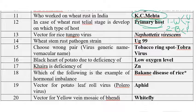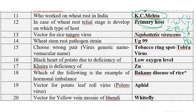The pycnial stage and aecial stage happen in Barberry, the secondary host. The basidiospore stage happens in soil. So two alternate hosts are required for wheat stem rust — wheat and Barberry. In wheat, the uredial stage and telial stage are formed. The pycnial stage and aecial stage are formed on Barberry, whereas the basidiospore stage is formed in soil.